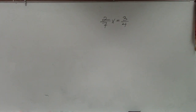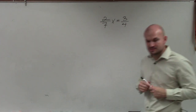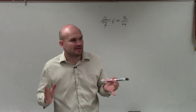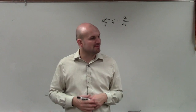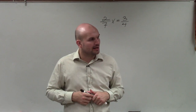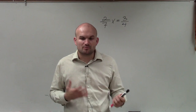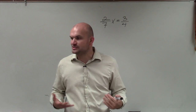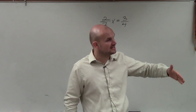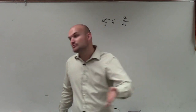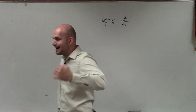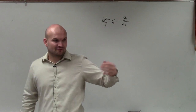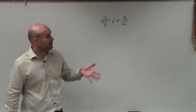In this example, I have 2/7 x equals 3/4. There are two different ways to do this. I'm going to show you the first way, which you might think is going to be a little bit more work. But when solving equations, especially when we get into multi-step and two-step equations, I think eliminating the fraction is the best way to go.